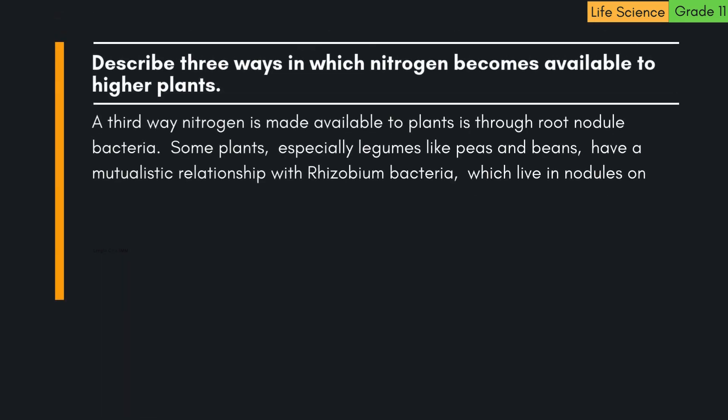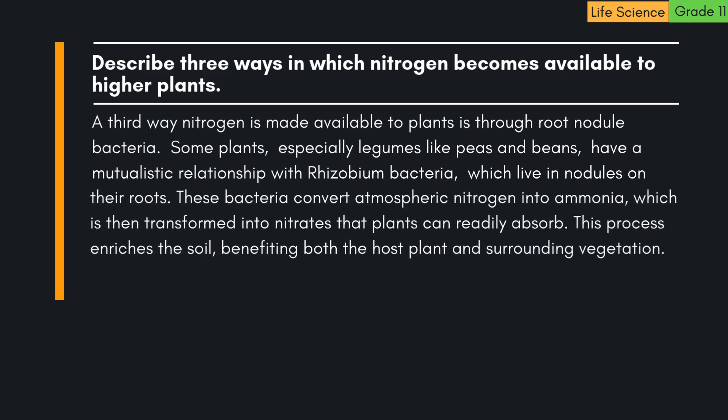A third way nitrogen is made available to plants is through root nodule bacteria. Some plants, especially legumes like peas and beans, have a mutualistic relationship with Rhizobium bacteria, which live in nodules on their roots. These bacteria convert atmospheric nitrogen into ammonia, which is then transformed into nitrates that plants can readily absorb. This process enriches the soil, benefiting both the host plant and surrounding vegetation.